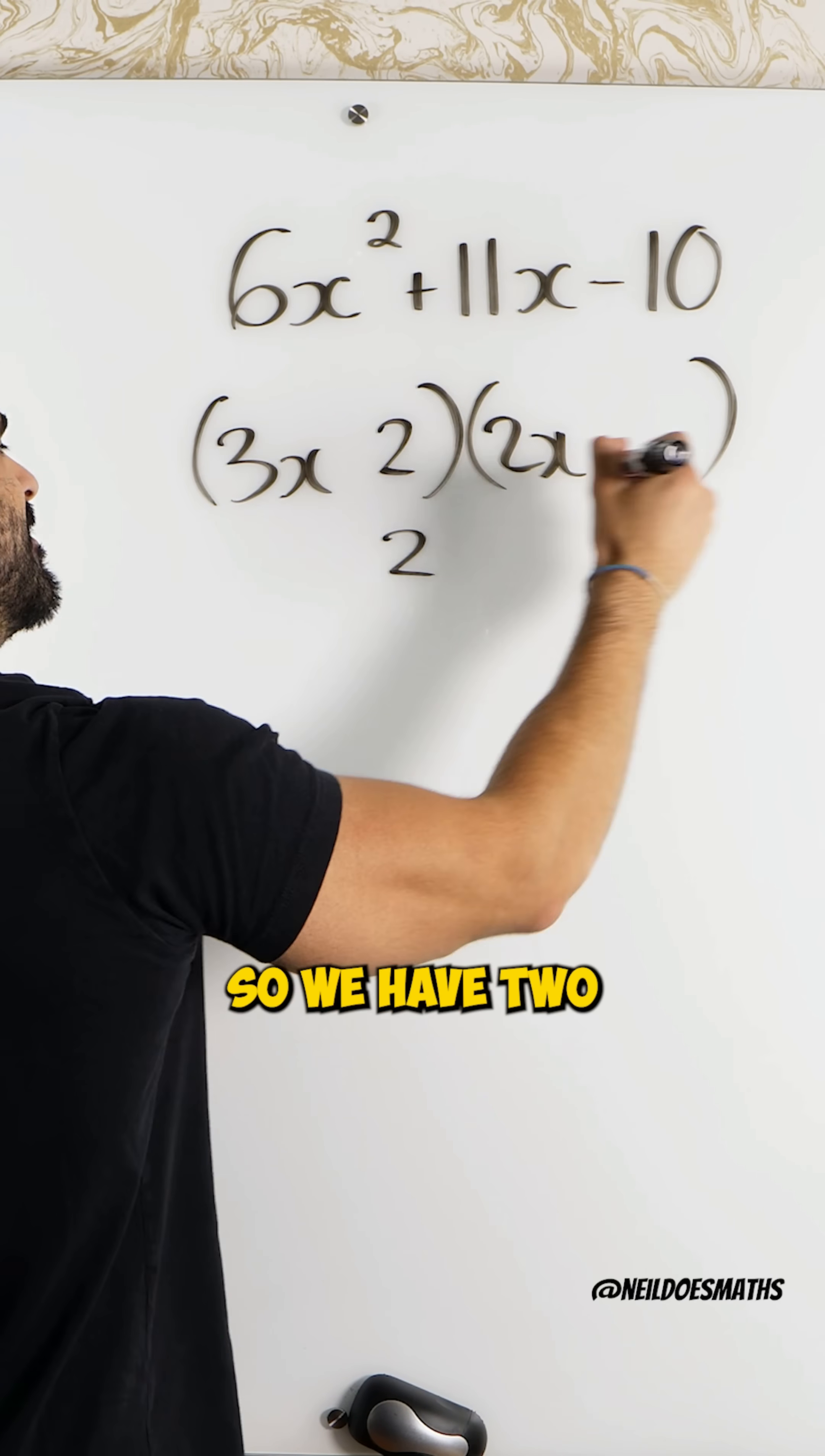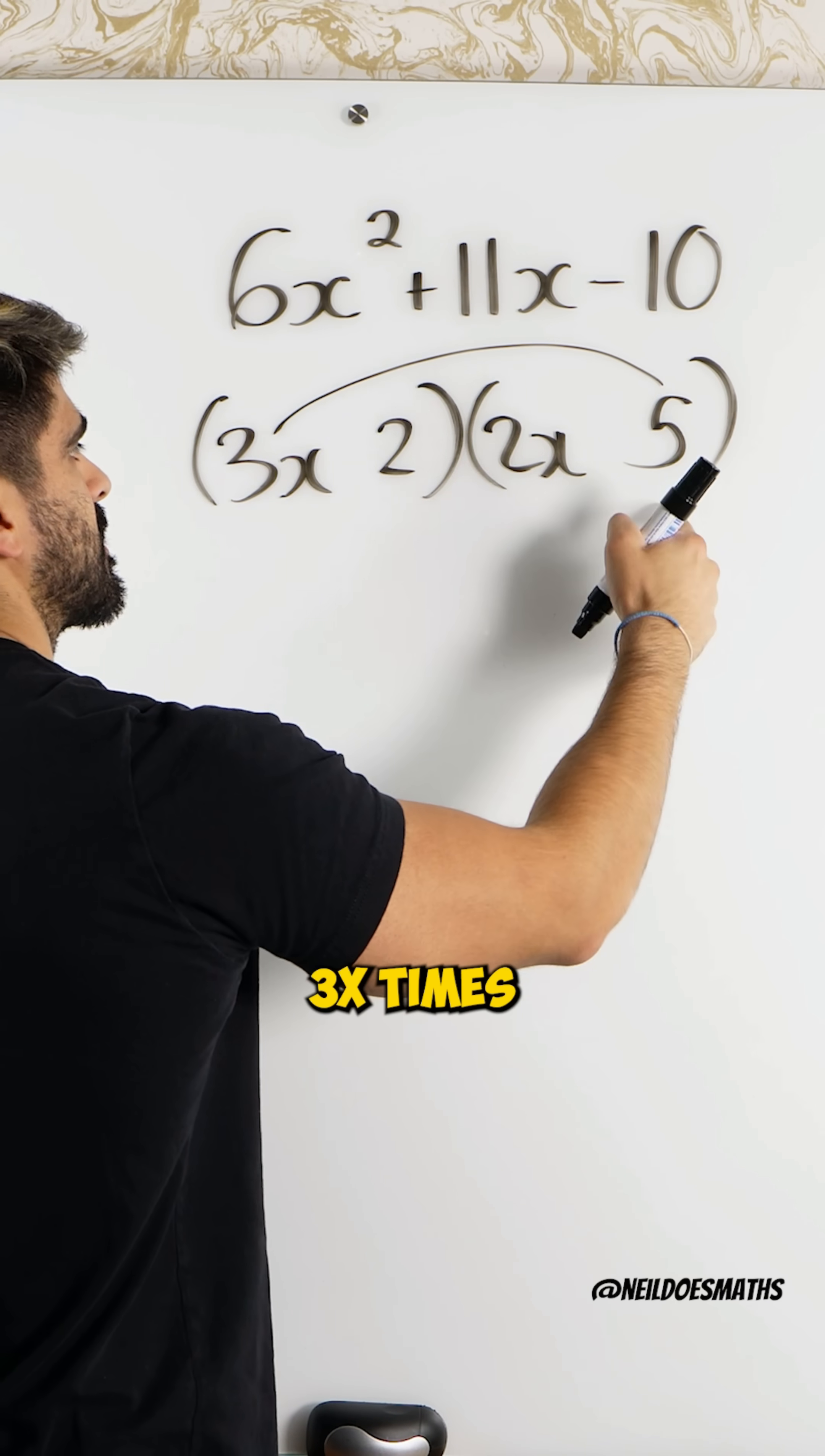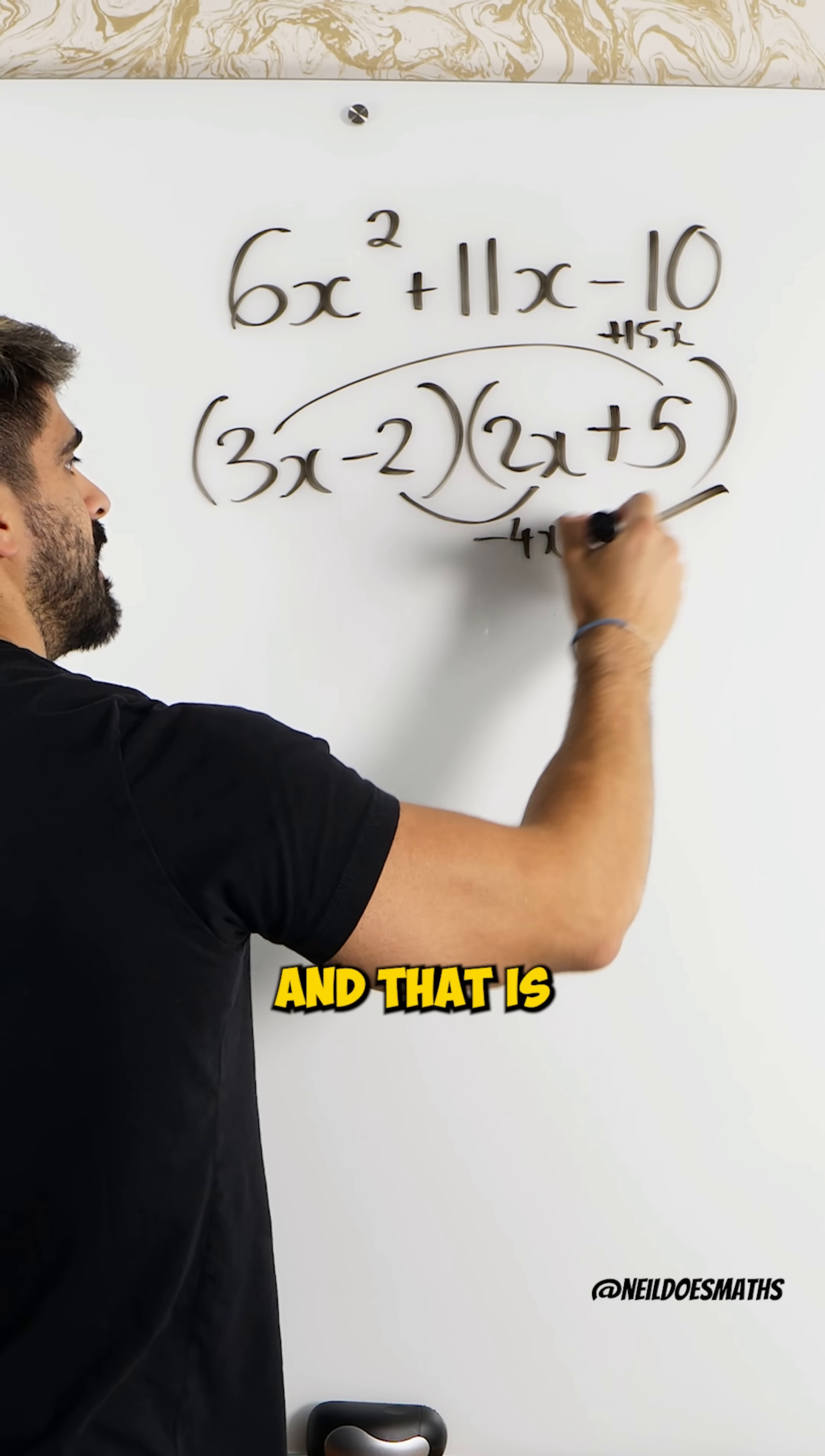So, we have 2 and 5. Now, we then need to check what the signs need to be. This is called my folloi method. We multiply the inner terms a bit like foil. 3x times 5 gives you 15x. This multiplies to give you 4x. How does 15x and 4x make 11x? If you have a plus 15 minus 4. So, I need a plus 15 minus 4 and that is factorized.